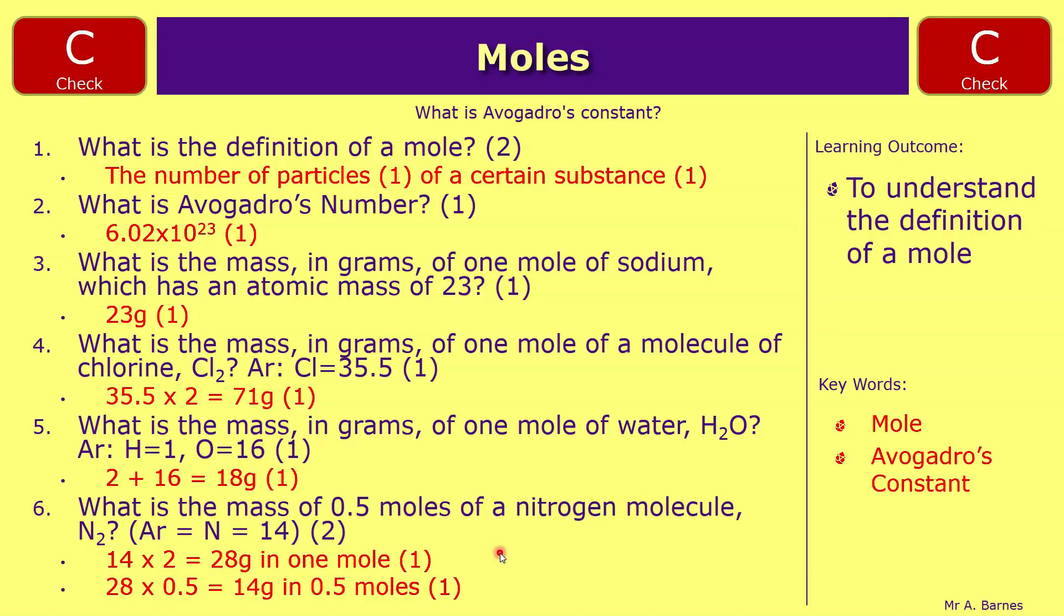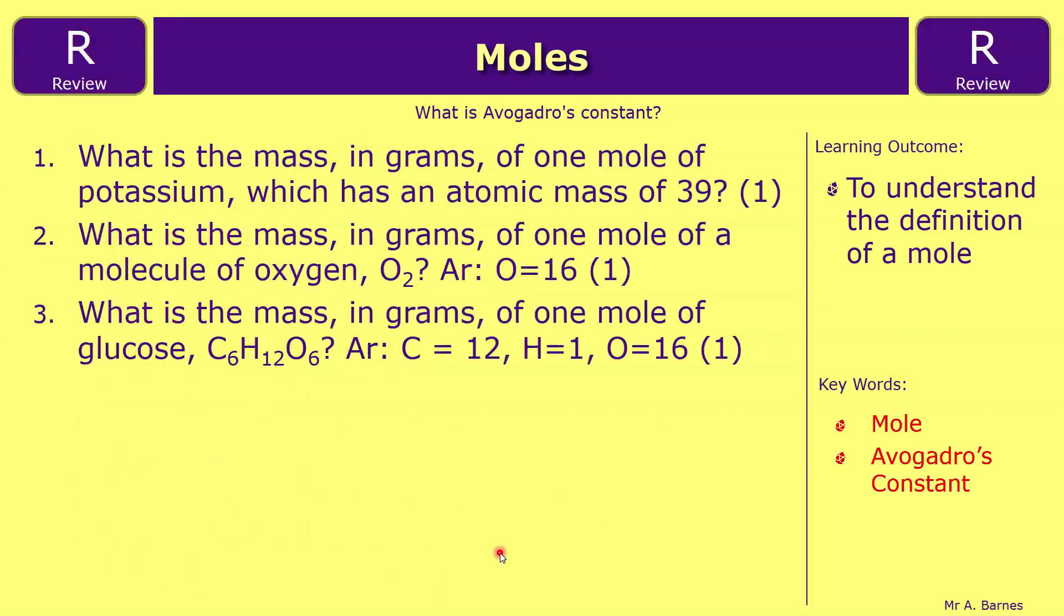Okay, hopefully that's made it a little bit clearer. It is a tricky video to get your head around. If you're feeling confident, have a go at the review questions which are more of the same. So question one: what is the mass in grams of one mole of potassium which has an atomic mass of 39? Question two: what is the mass in grams of one mole of oxygen molecule O2? And then question three: what is the mass in grams of one mole of glucose C6H12O6?